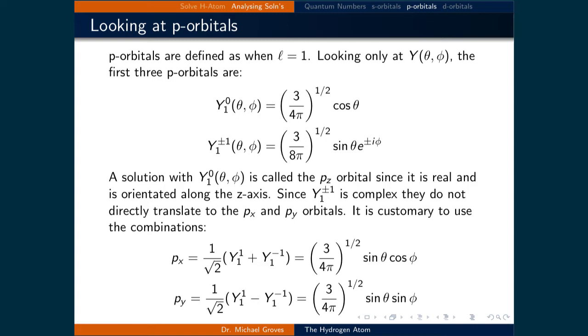Since Y plus or minus 1,1 is complex, they do not directly translate into the p_x and p_y orbitals.